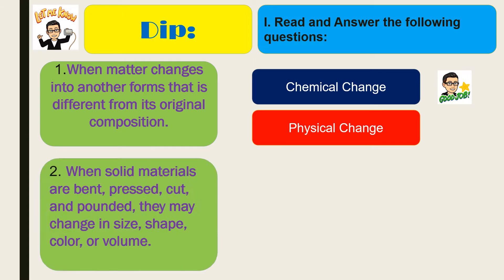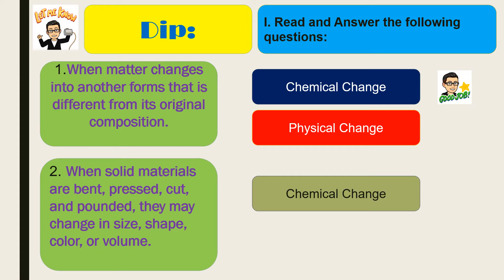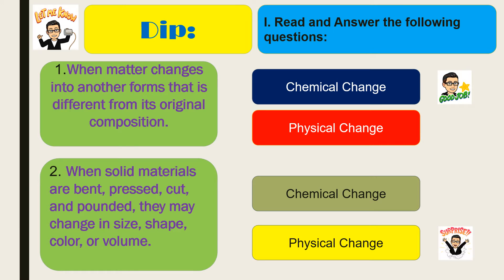Next, when solid materials are bent, pressed, cut and pounded, they may change in size and shape — chemical change or physical change? Yes, you are correct. The correct answer is physical change.